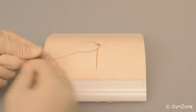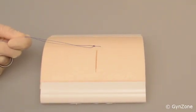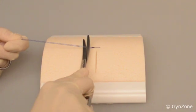Place the knot to the side of the wound edge, so the knot does not prevent the wound from closing. Cut the ends of the thread about 1cm from the knot.